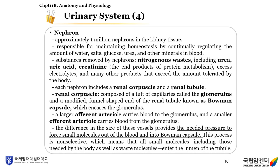Now I'm going to talk about the nephron. Approximately one million nephrons are in the kidney tissue. The nephron is responsible for maintaining homeostasis by continually regulating the amount of water, salts, glucose, urea, and other minerals in blood. Substances removed by nephrons include nitrogenous waste such as urea, uric acid, and creatinine—creatinine being the end product of protein metabolism—as well as excess electrolytes and other products that exceed the amount tolerated by the body.